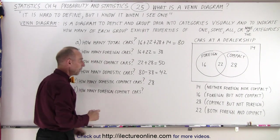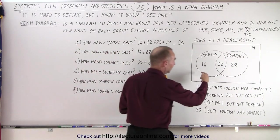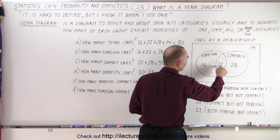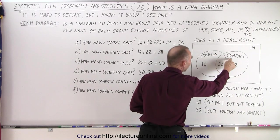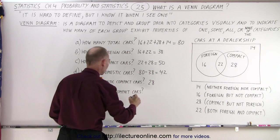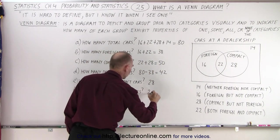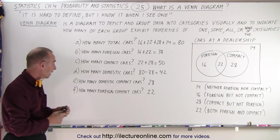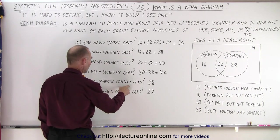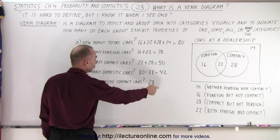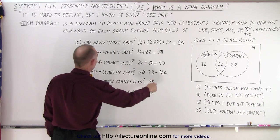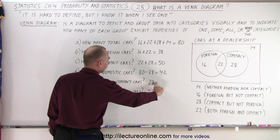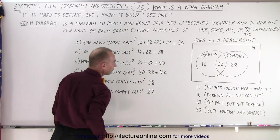And how many foreign compact cars? It has to be inside the circle of foreign and also inside the circle of compact. That intersection is 22, so there are 22 foreign compact cars. Now if we add the domestic compact cars and the foreign compact cars we should equal the total compact cars — 28 plus 22 equals 50, which is exactly what we have.